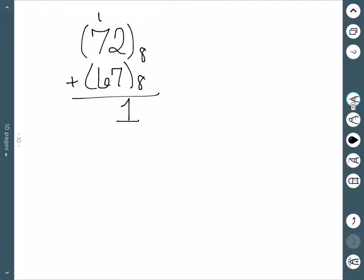We then have 1 plus 7 plus 6, which is 14. 8 goes into 14 once with 6 left over. And then this final one can just be brought down since there's no more addition. So the sum of these is 161 base 8.